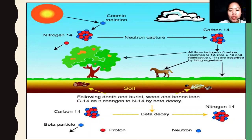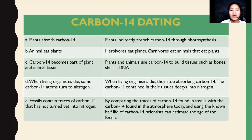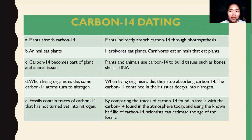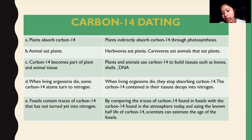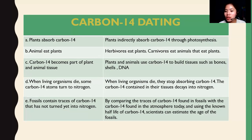Plants absorb carbon-14 indirectly through photosynthesis. Animals eat plants — herbivores eat plants, carnivores eat animals that eat plants — and carbon-14 becomes part of animal tissue. Once a plant containing carbon is eaten, the carbon is already in the body. Plants and animals use carbon-14 to build tissues such as bones, shells, and DNA.